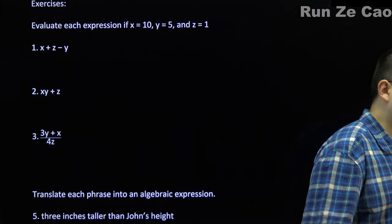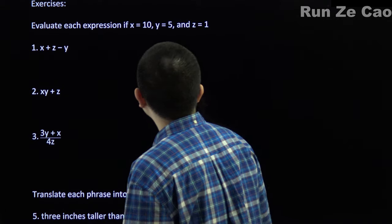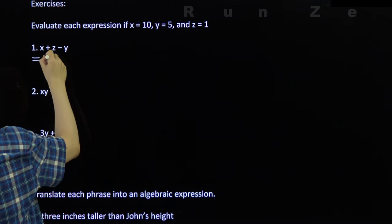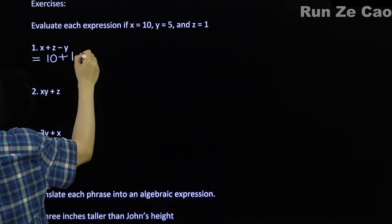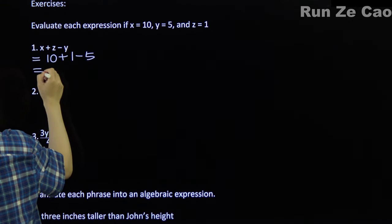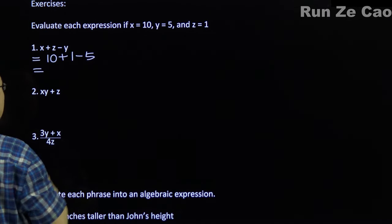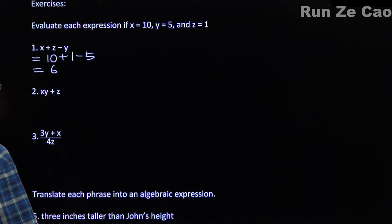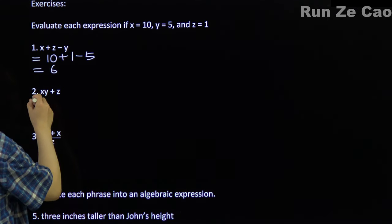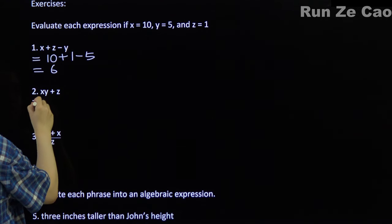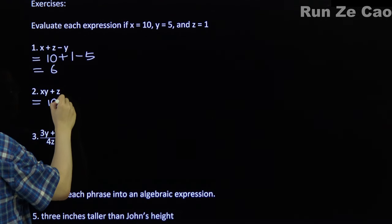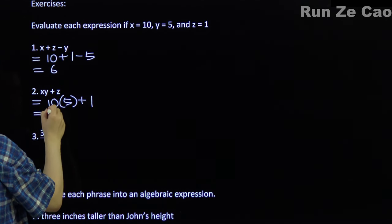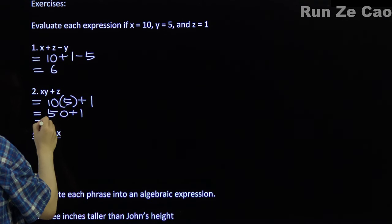Let's evaluate some expressions if x = 10, y = 5, and z = 1. We substitute in: x + z − y = 10 + 1 − 5 = 11 − 5 = 6. You can simplify multiple steps at once for addition and subtraction. xy + z = 10 × 5 + 1 = 50 + 1 = 51.